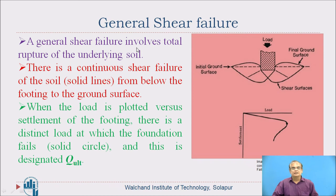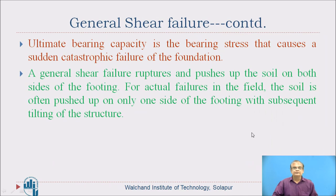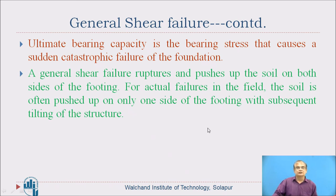General shear failure involves total rupture of the underlying soil, with a continuous shear failure from below the footing to the ground surface. When load is plotted versus settlement of the footing, there is a distinct load at which the foundation fails — a distinct point of failure in the load-settlement curve. A general shear failure ruptures and pushes the soil on both sides of the footing. In actual field failures, soil is often pushed up on only one side of the footing with subsequent tilting of the structure.